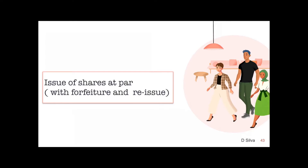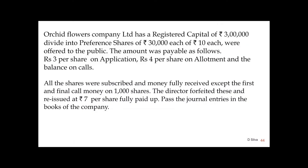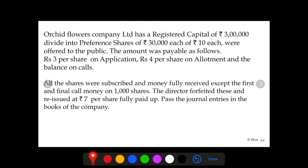Hello students. In this video we will learn how companies issue shares at par, with forfeiture and reissue. Orchid Flowers Company Limited has a registered capital of rupees 3 lakh, divided into preference shares of rupees 30,000 each of rupees 10 each. These were offered to the public, payable as: rupees 3 per share on application, rupees 4 per share on allotment, and the balance on calls. All shares were subscribed and money fully received except the first and final call money on 1,000 shares. The directors forfeited these and reissued at rupees 7 per share fully paid up. Pass the journal entries in the books of the company.